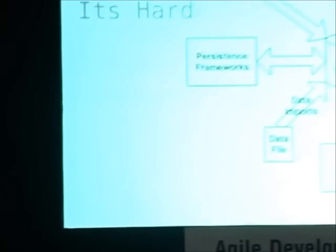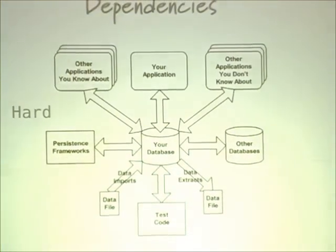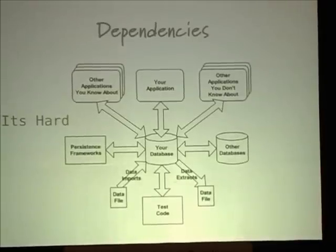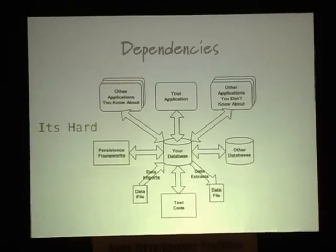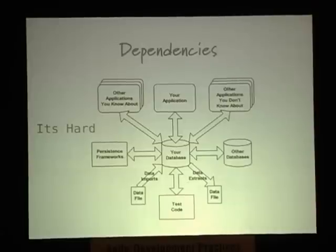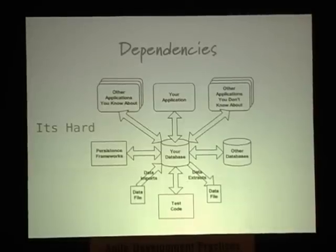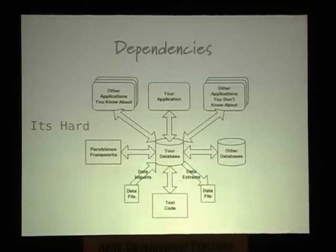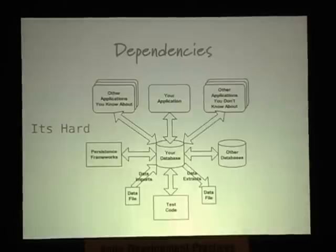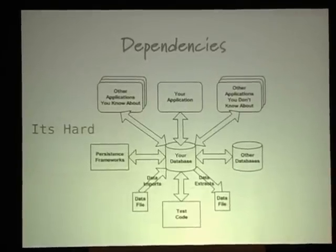You cannot just rename the customer table to client and say you're done — there is code talking to the database that still thinks you have a customer table, not a client table. When the code talks to the database it will say 'table not found.' So it's important to think about behavioral as well as informational semantics of the database and its interaction with your application. In an enterprise database that's been in production for years, many things talk to it — reports, batch feeds, web services, all kinds of stuff.